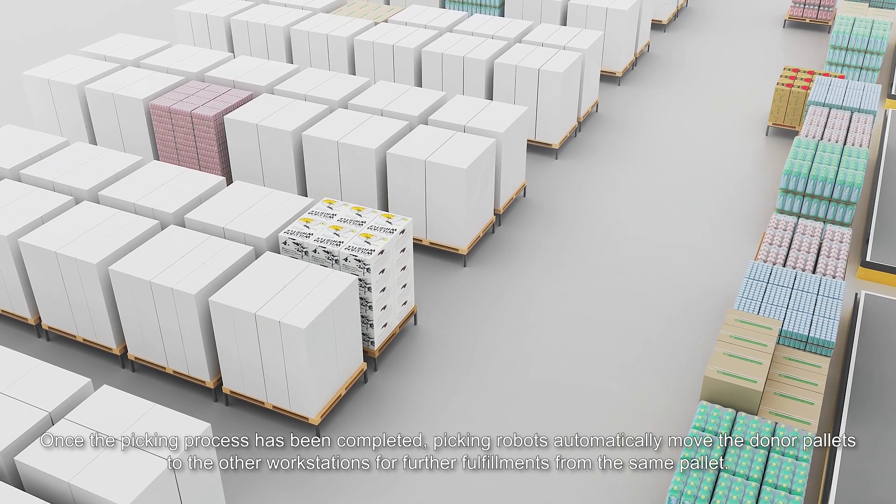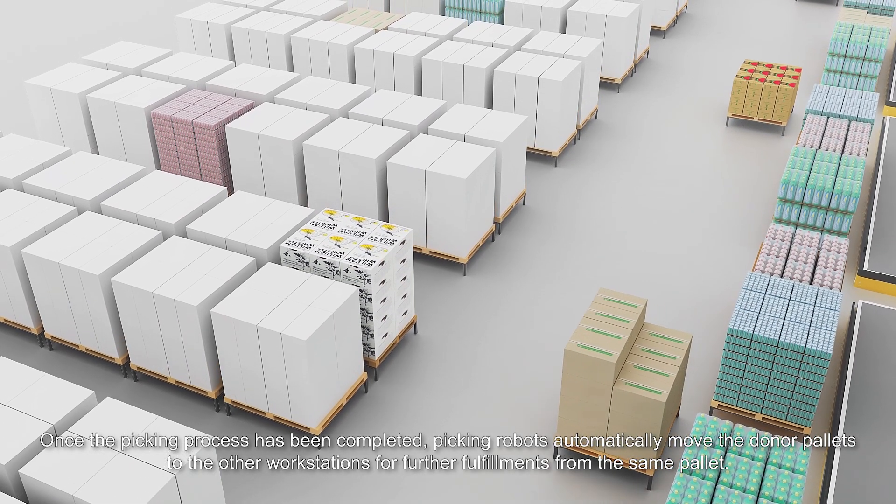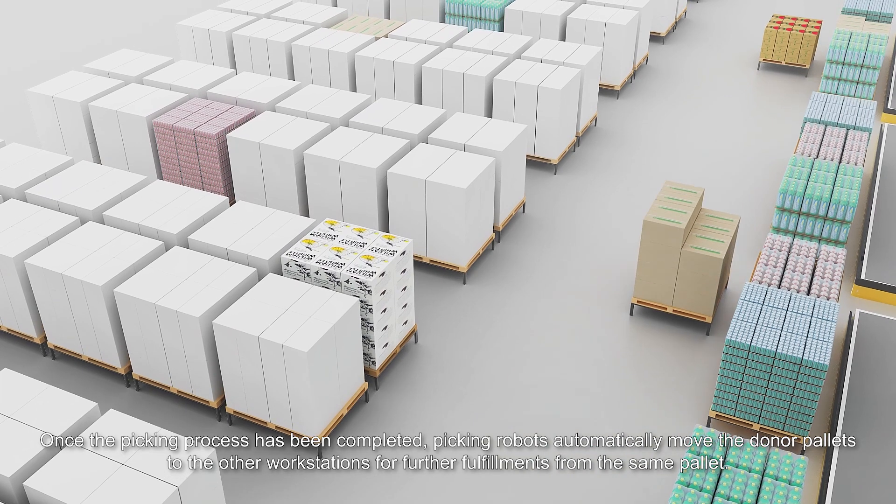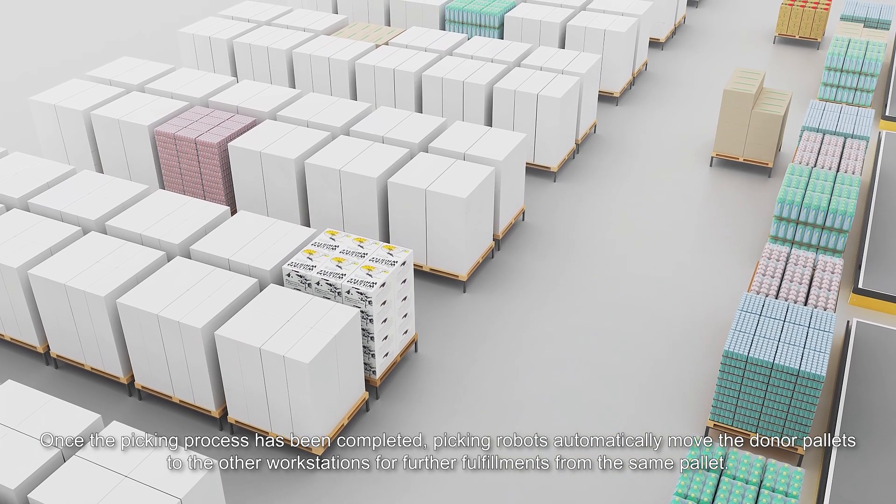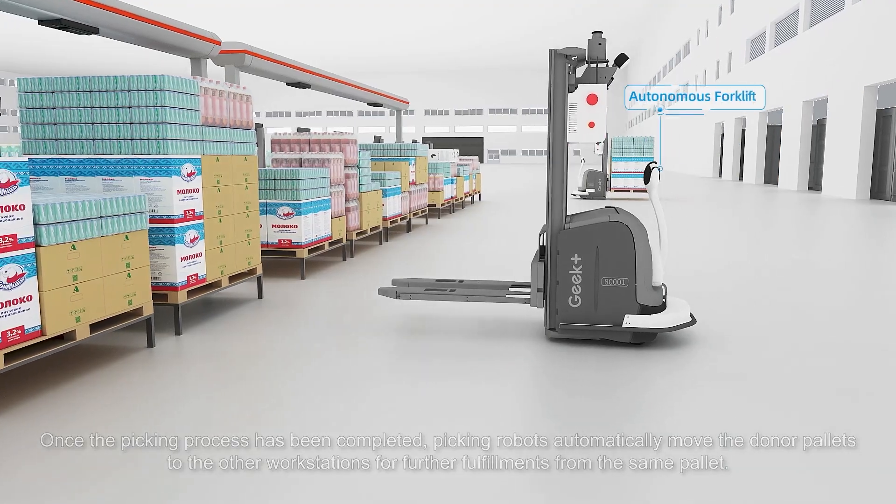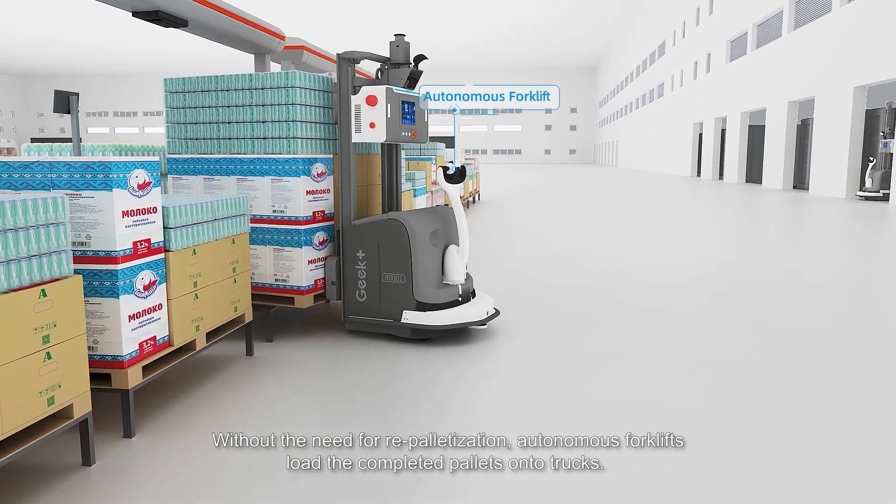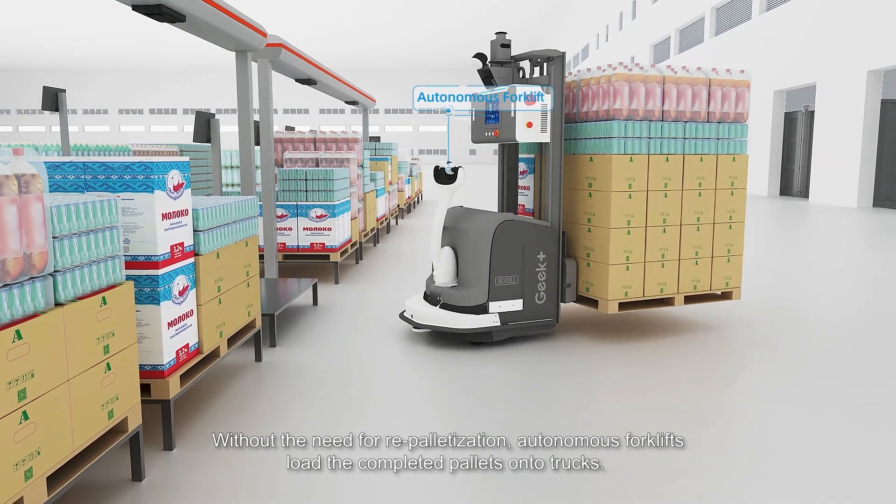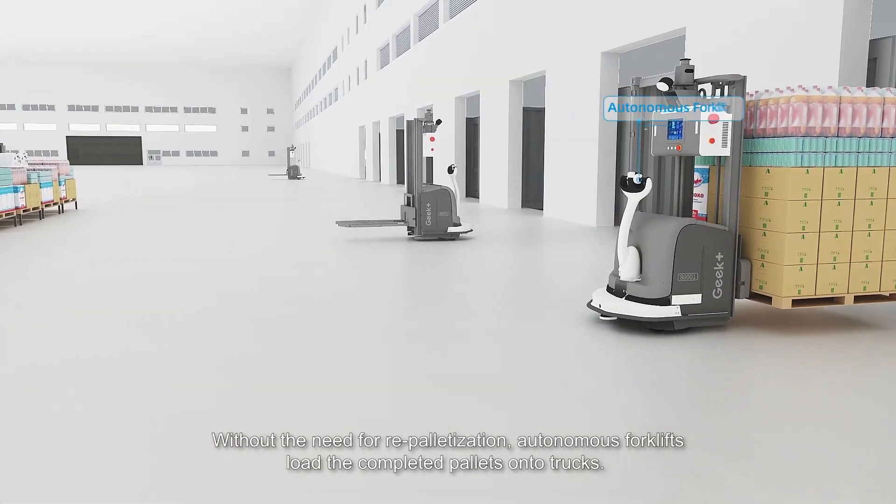Once the picking process has been completed, picking robots automatically move the donor pallets to the other workstations for further fulfillments from the same pallet. Without the need for repalletization, autonomous forklifts load the completed pallets onto trucks.